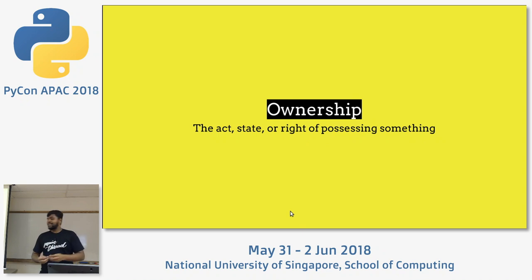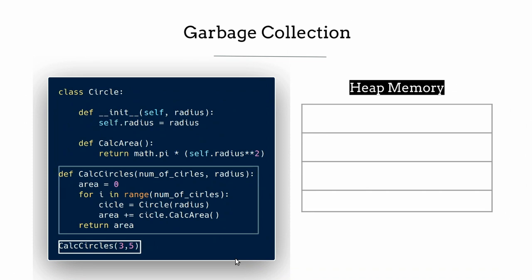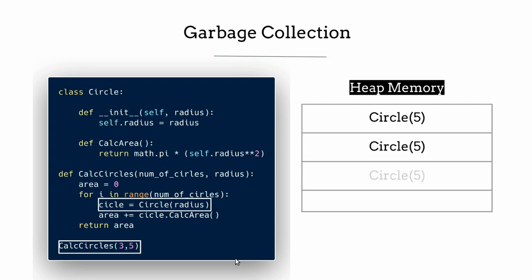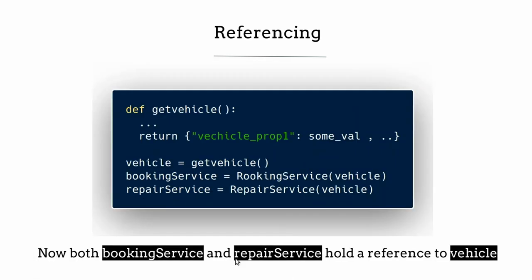Now coming to the main concept of how Rust achieves memory safety without a garbage collector — this is the concept of ownership and borrowing. Consider a Python class called circle that takes in the radius and calculates the area. When you create circle objects, they go to the heap memory. Once the function executes, a garbage collector software in Python runs, sees parts of the memory are unused, and cleans them. The problem with the garbage collector is it runs behind your code and takes a good amount of your hardware processing power.